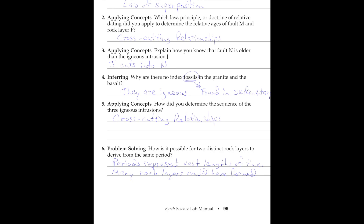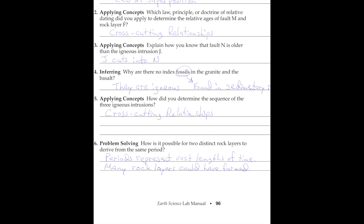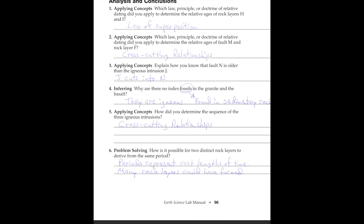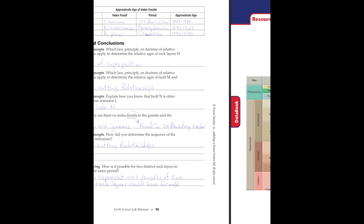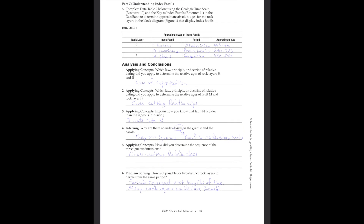That's why we divide things down even further from periods into epochs, and we can go further than that. We keep dividing things down because there are a lot of rock layers that will form within a period. A period can be a huge amount of time — tens of millions of years — so there can be a lot of rock layers there. Now that we've got all this done, you can go ahead and take your quiz.